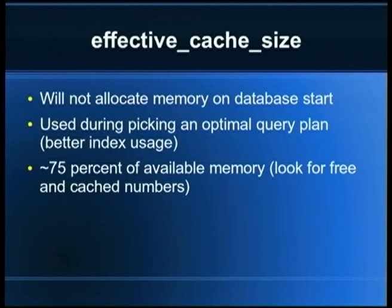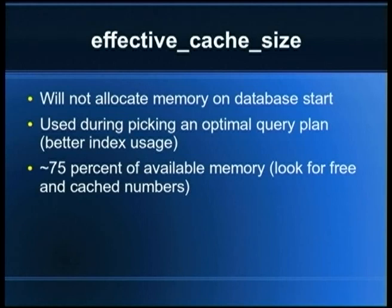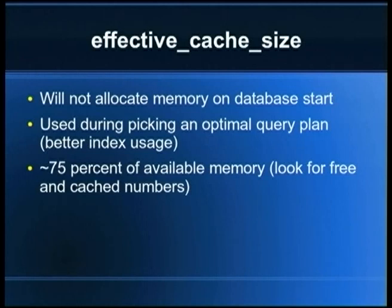Next is effective_cache_size. This is not memory actually allocated at startup — it's a value used by the query planner when picking an optimal execution plan. The database server sees this as the total amount of OS cache available. With a bigger number here, it can pick a more aggressive query plan using proper indexes. A starting point is 75% of available RAM, derived from the 'free' and 'cached' values in the output of free or top.